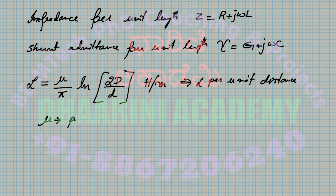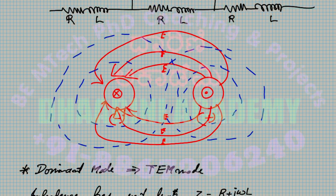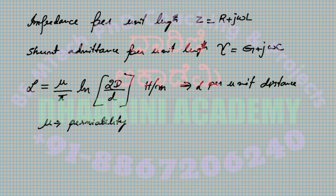Here μ is the permeability — a magnetic property of the material. It represents a measure of how much flux is produced by a magnetizing current. More permeability means more flux can be generated. μ = μᵣ · μ₀, where μᵣ is the relative permeability specific to the material (copper has a different μᵣ than gold), and μ₀ is the permeability of free space.